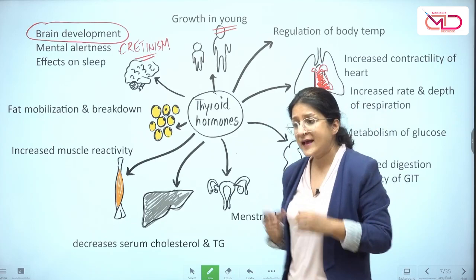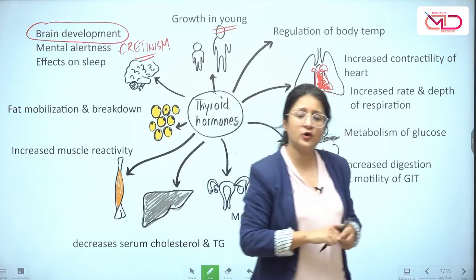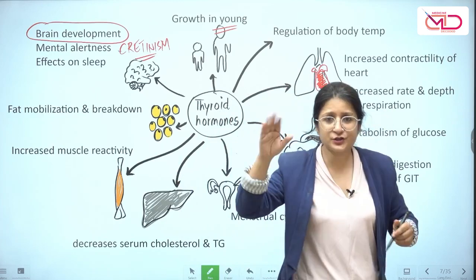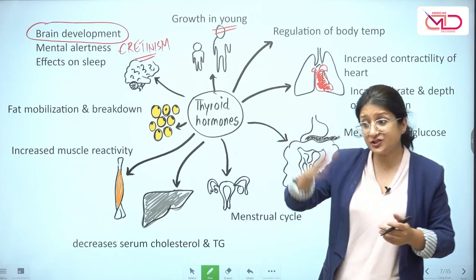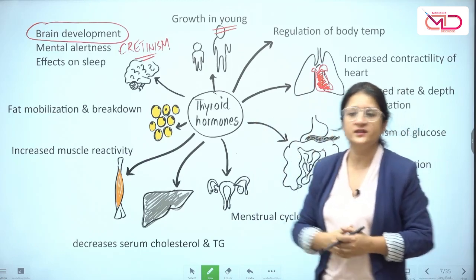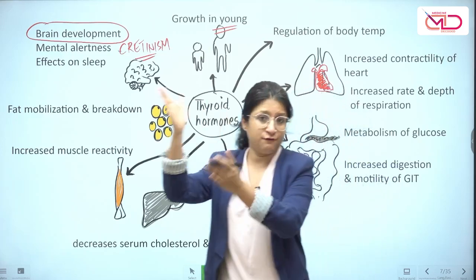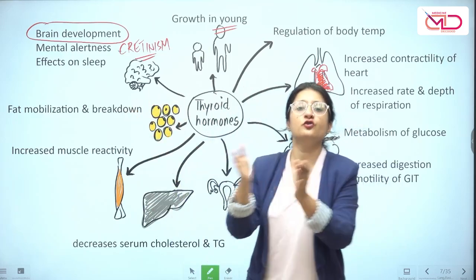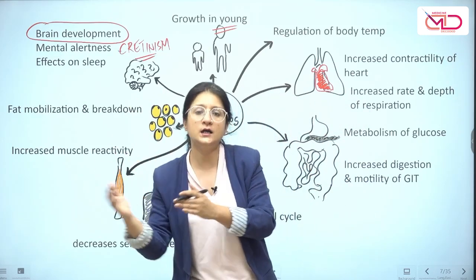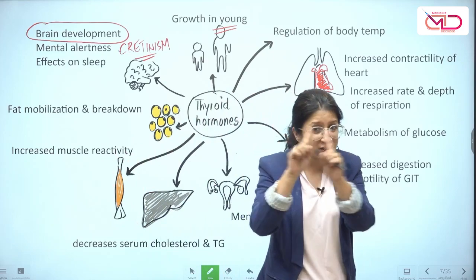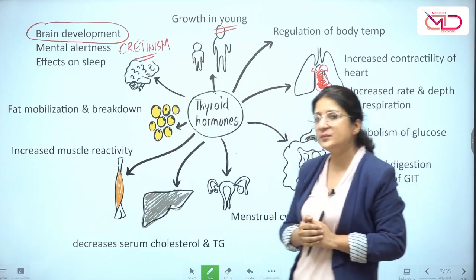But what happens when there is excess of thyroid hormones? With excess thyroid hormones, there is an initial rapid growth — so initially the child could be taller. But bones that grow faster also mature faster. Epiphyseal closure is achieved earlier, so overall the duration of growth is shortened, and eventually the height can be stunted.